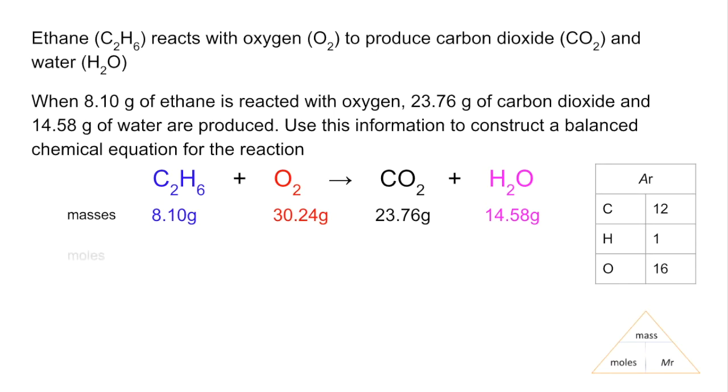And so the next thing is the moles. Dividing by the MR we get 0.27 for ethane, 0.945 for oxygen, 0.54 for carbon dioxide and 0.81 for water. So to get the ratio divide everything by the smallest and you can see the ethane is the smallest.